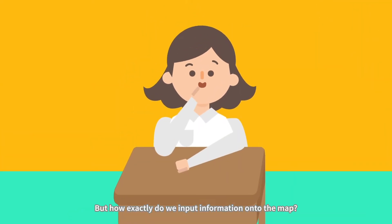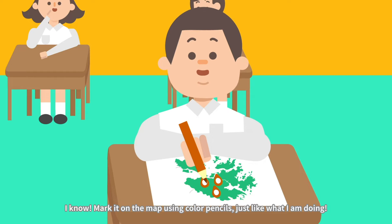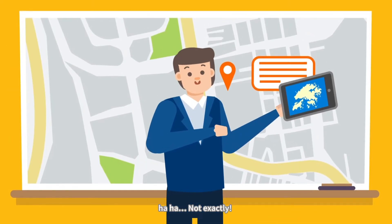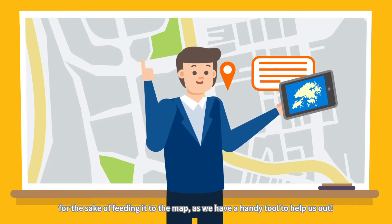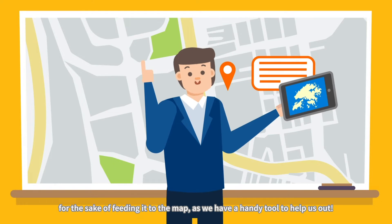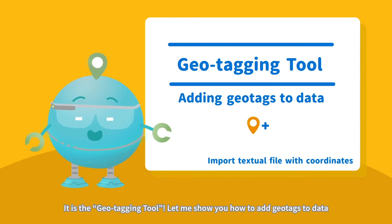But how exactly do we input information onto the map? Mark it on the map using color pencils, just like what I am doing! Not exactly! It is actually quite easy to turn real-world information into spatial data for the sake of feeding it to the map, as we have a handy tool to help us out — it is the geotagging tool!